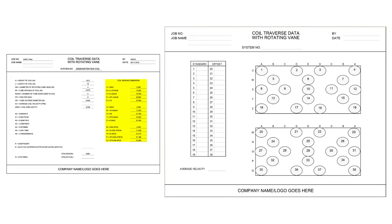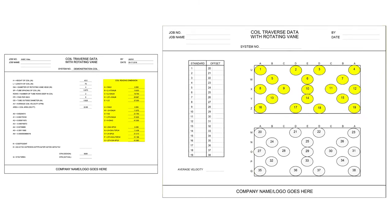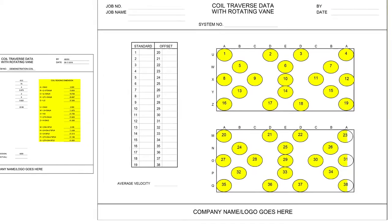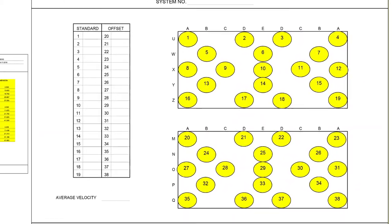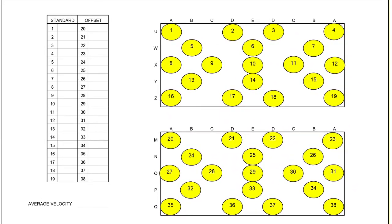These coil reading dimensions are used to measure and mark the 1 through 19 standard velocity reading locations and the 20 through 38 offset velocity reading locations. The vane anemometer positioning diagram is located on page 2 of the coil traverse data with rotating vane form, and these locations are used to position the center of the rotating vane anemometer.